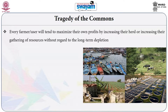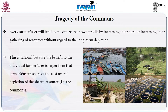This individual behavior of maximizing one's own profit is quite rational because the benefit to the individual farmer is always larger than that farmer's share of the cost of overall depletion of the shared commons resource.